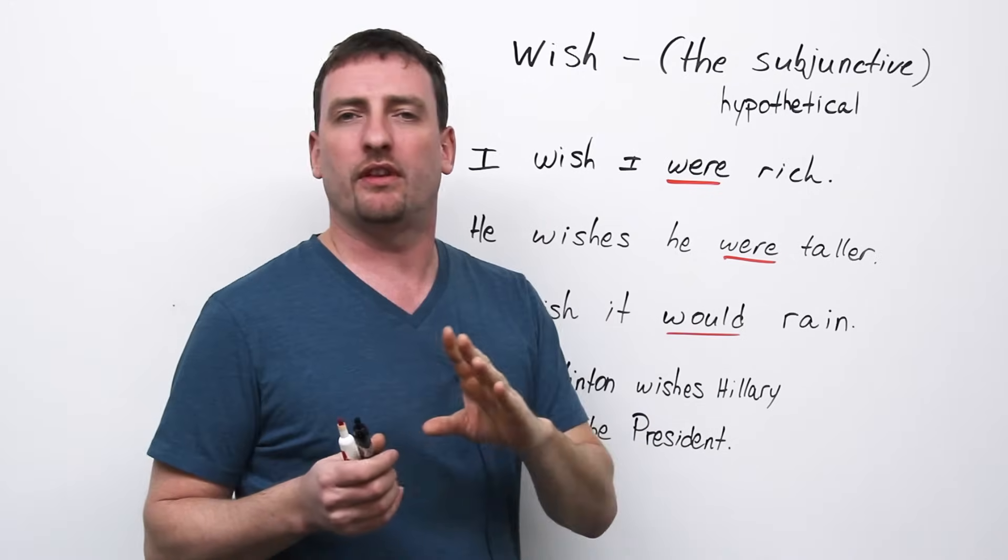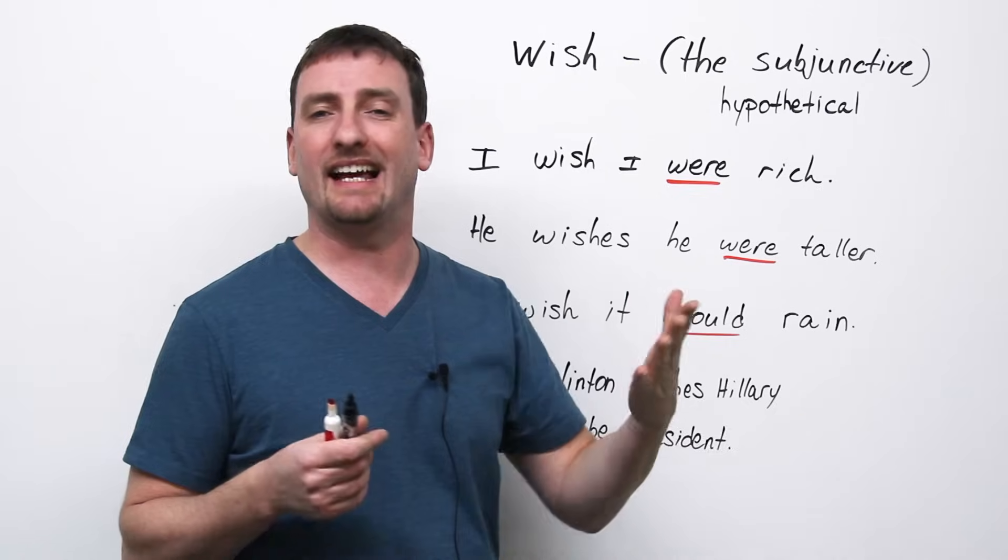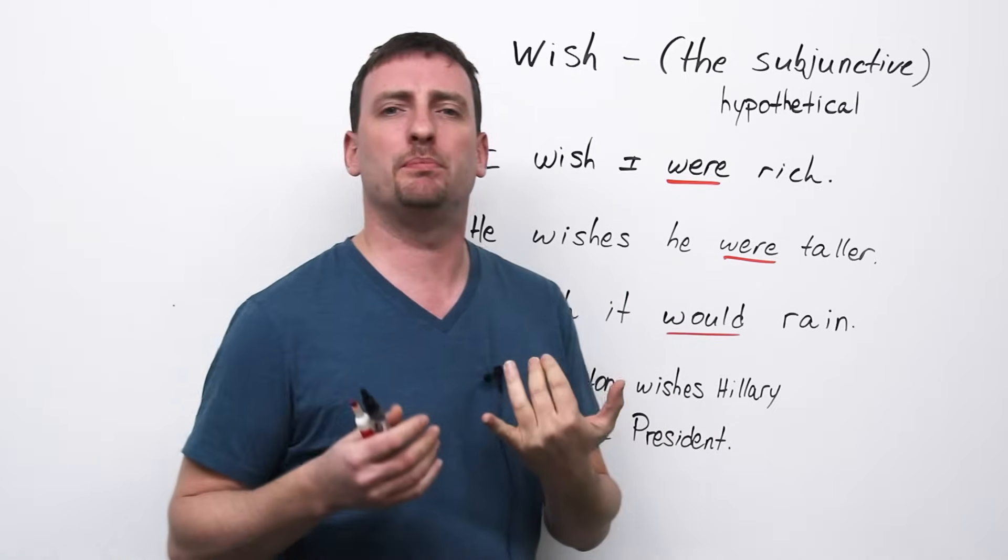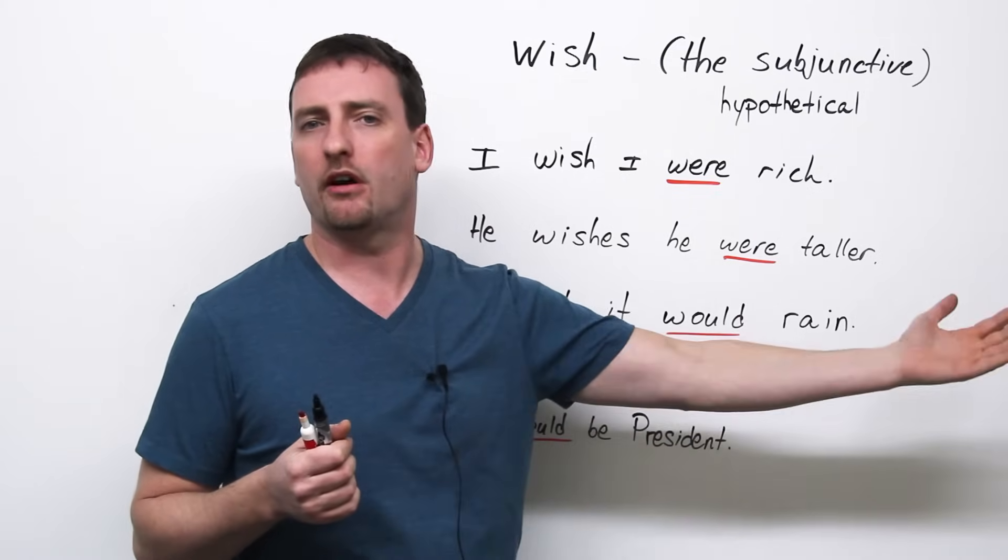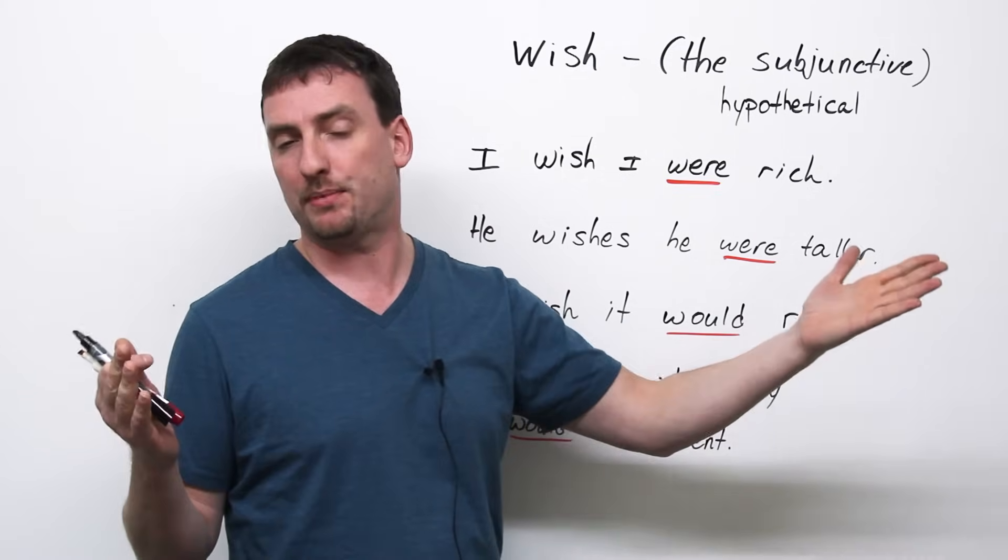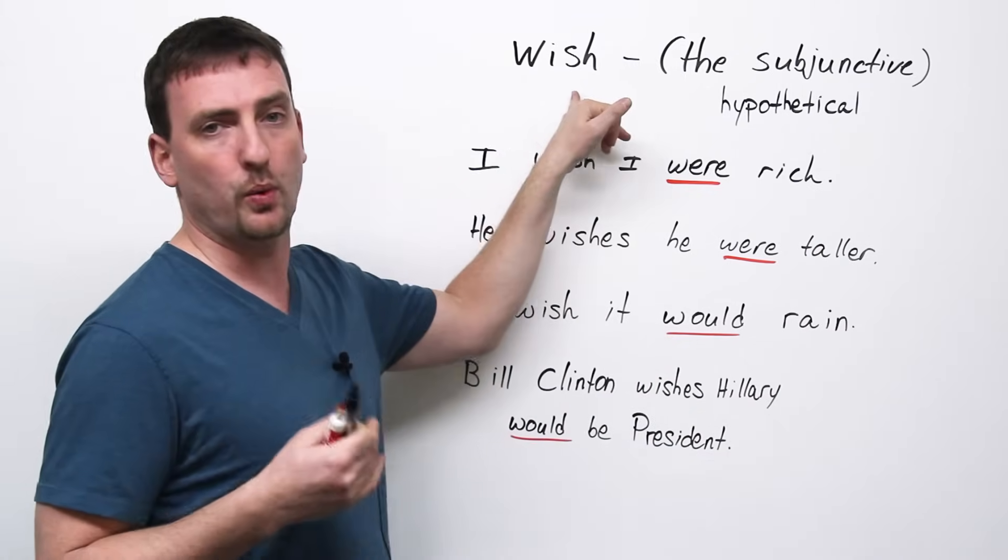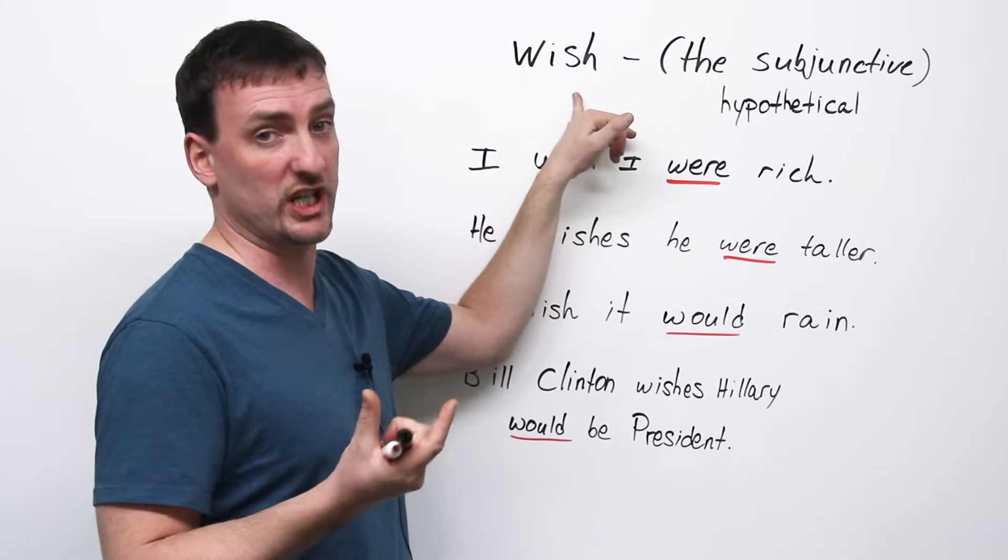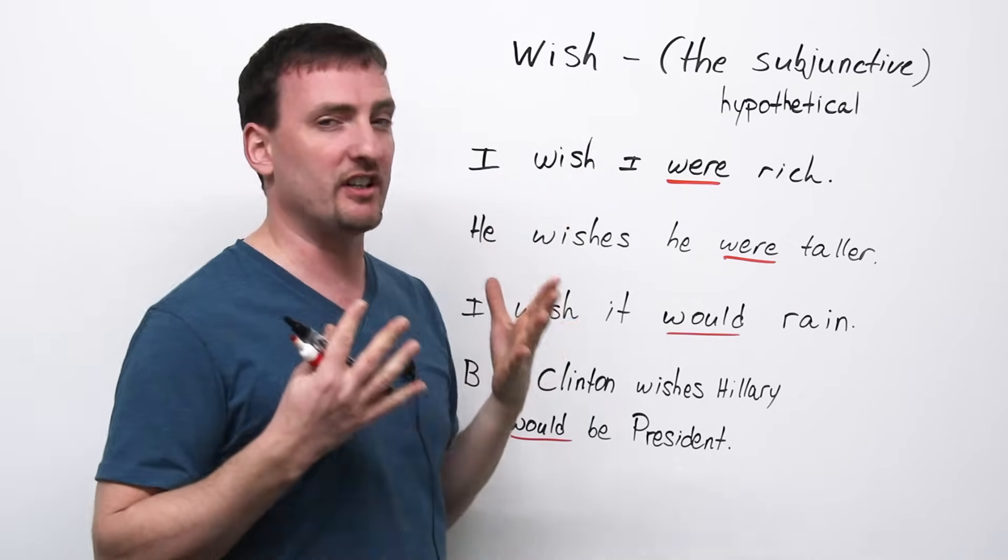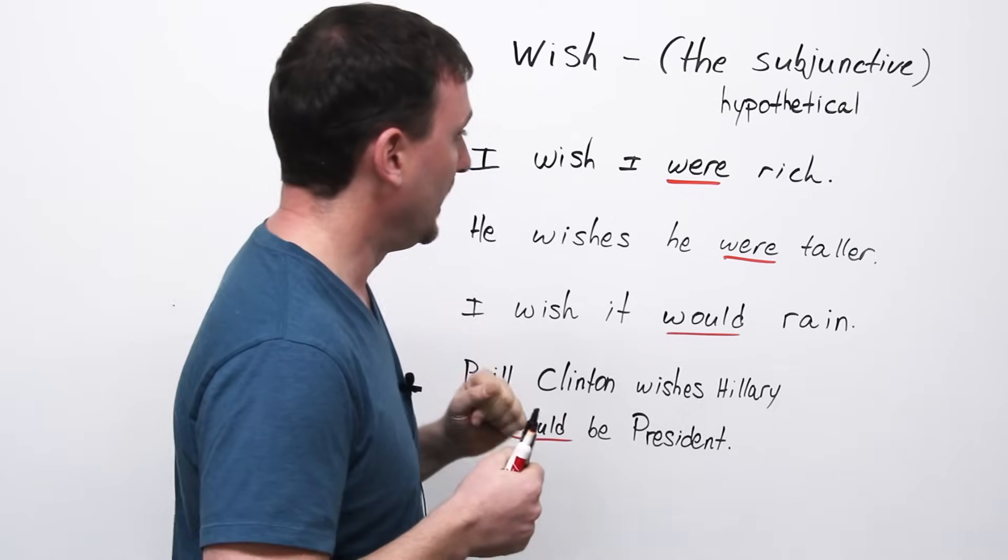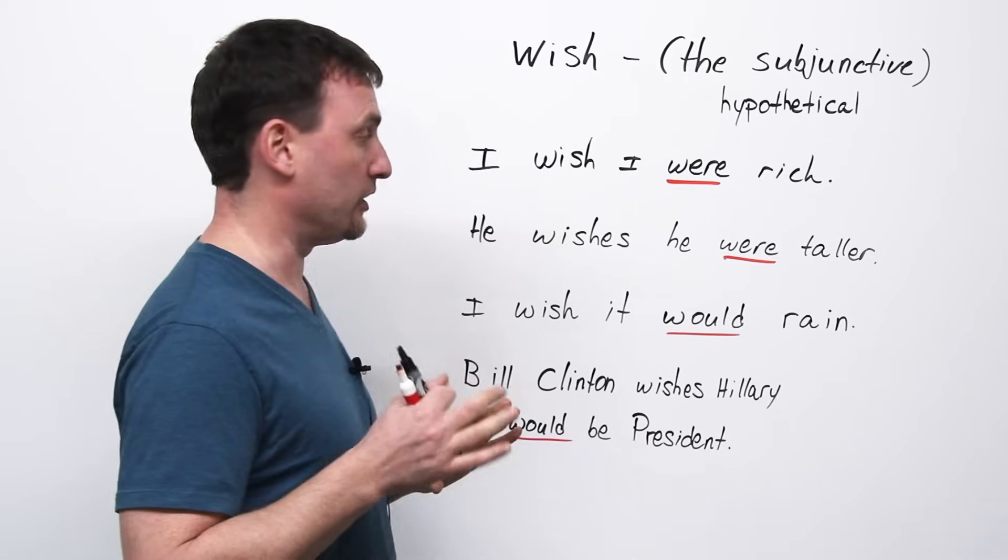First of all, let me tell you there are two different, or three even, different ways of looking at the subjunctive. Usually, people think the doctor recommended he go to hospital. That is one example of the subjunctive. What I want to look at today is the word wish, the verb, to wish. And how it is used, because this is sometimes very confusing to students. So, here I have a few examples of how to use the verb wish.